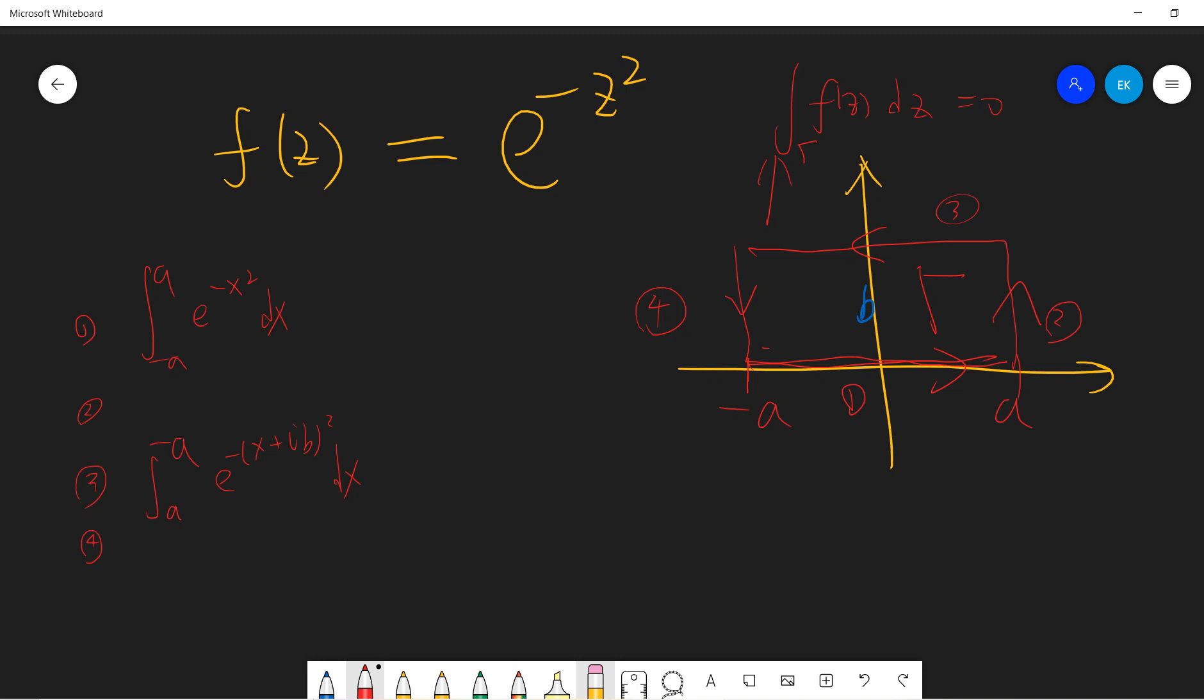The second one: z should be written as a plus it, where t goes from zero to b. So this is exponential negative (a plus it) squared times i dt from zero to b.